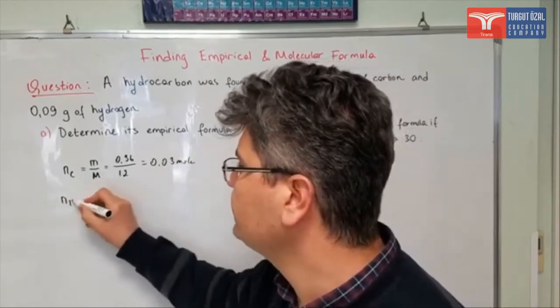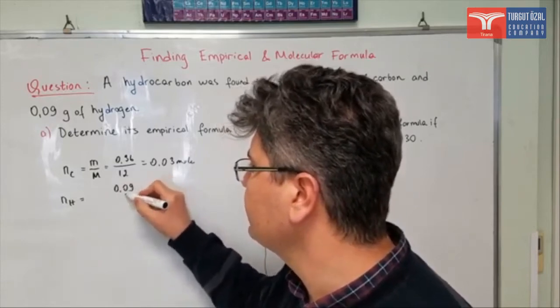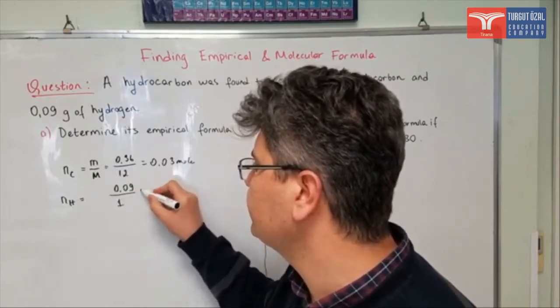And mole number of hydrogen is, again the same formula, 0.09 grams divided by 1 gram per mole.